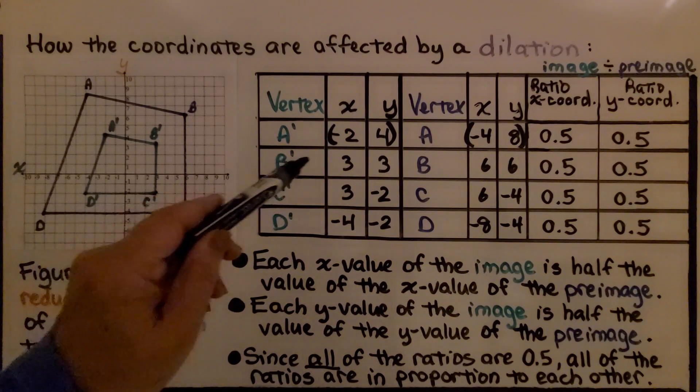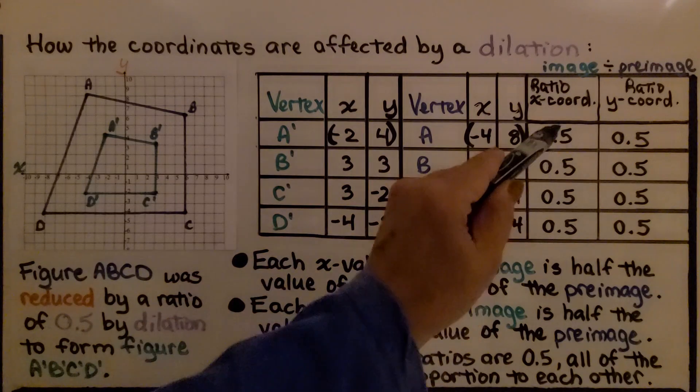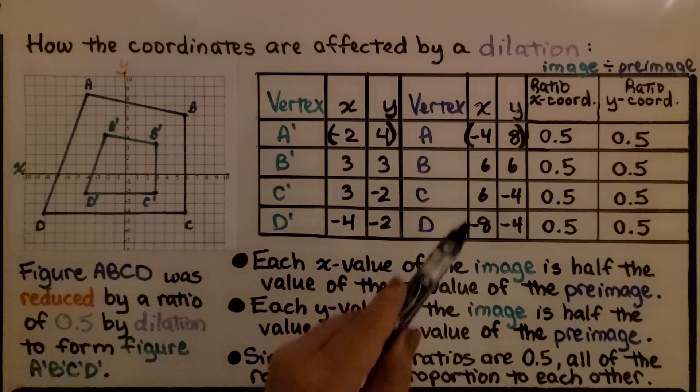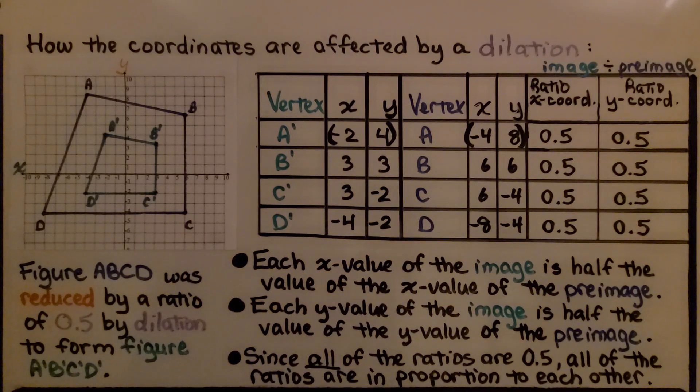And we did it for each x and y value, and every single time our ratio came out as 5 tenths. Each x value of the image is half the value of the x value of the preimage. And same for the y values. They were half the value of the y value of the preimage. And since all of the ratios are 5 tenths, all of the ratios are in proportion to each other.